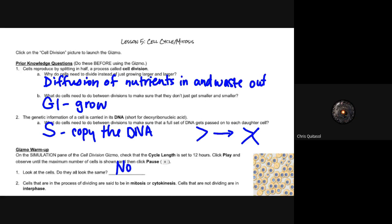Cells reproduce by splitting in half - the process is called cell division. Why do cells need to divide instead of just growing larger and larger? It has to do with the ability for nutrients to get into smaller cells and waste to get out much more efficiently than if it was a very large cell. If it was a huge cell, it would be very difficult for large amounts of nutrients and waste to get in and out, whereas with smaller cells it's much easier.